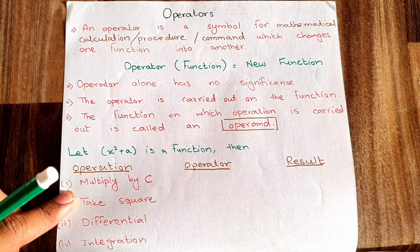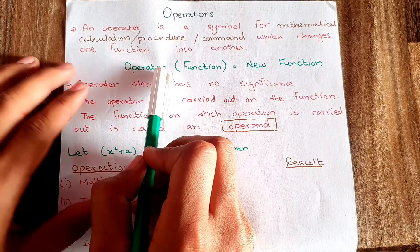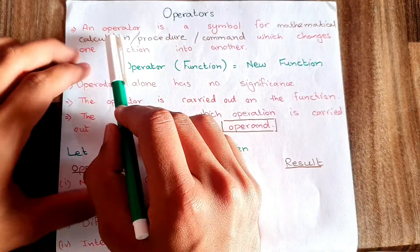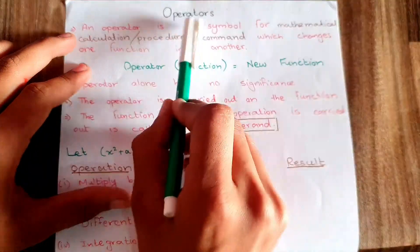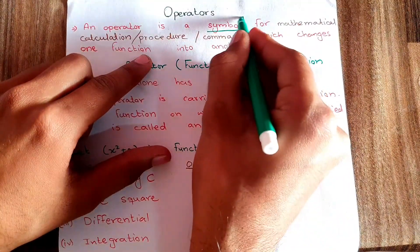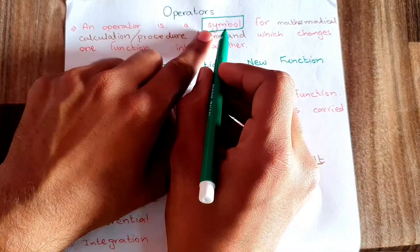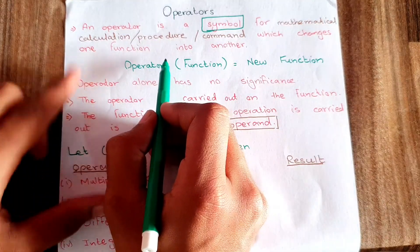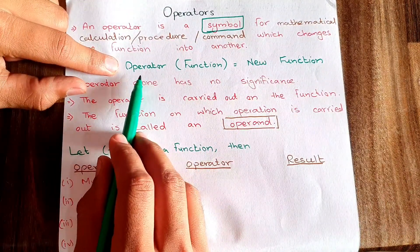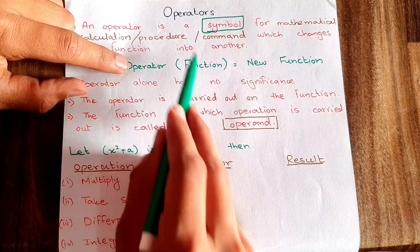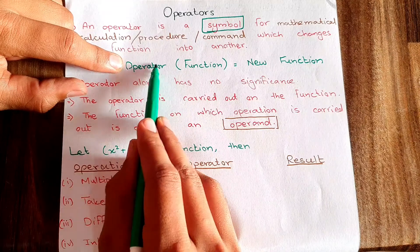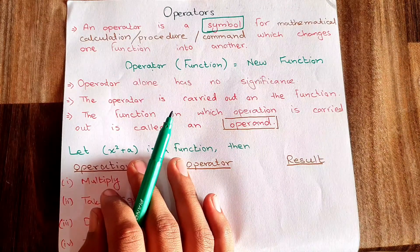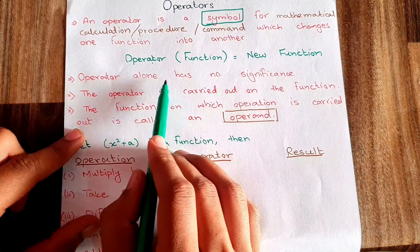The topic of today's video lecture is operators. An operator is a symbol for mathematical calculation — just a symbol that is used to carry out some calculation, some procedure, some command on a function. The operator is applied on a function and we get as a result a new function. Operator alone has no significance.